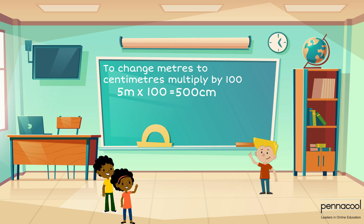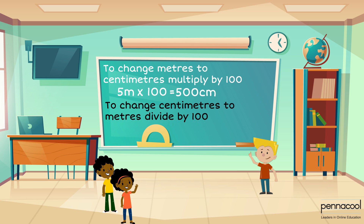To convert in the opposite direction, meaning centimeters to meters, we must divide by 100. Representing 700 centimeters in meters, we take our value of 700 and divide it by 100, giving us the measurement of 7 meters.